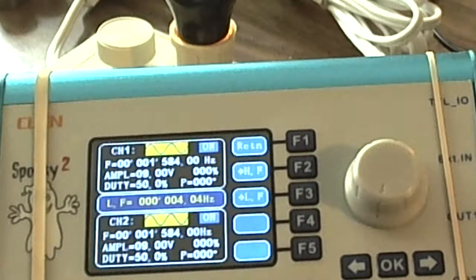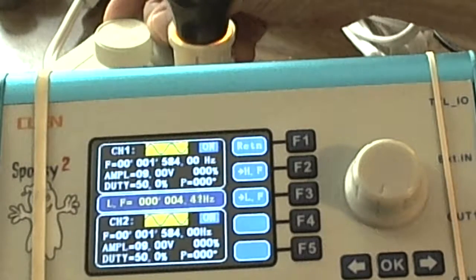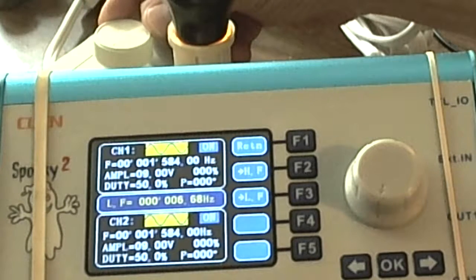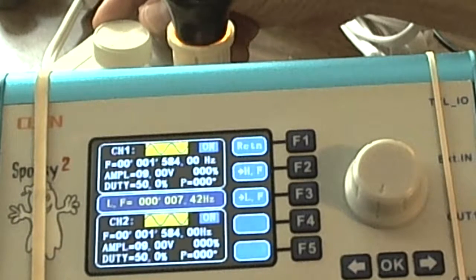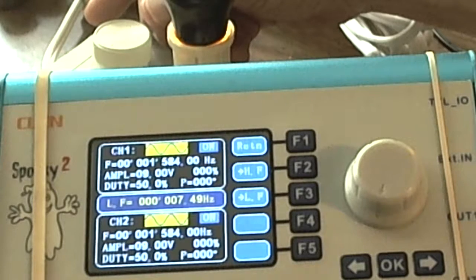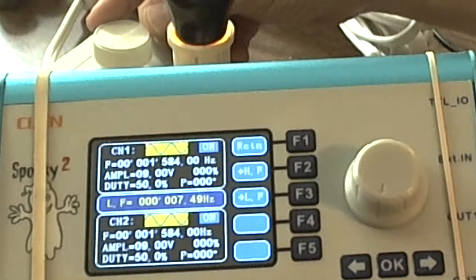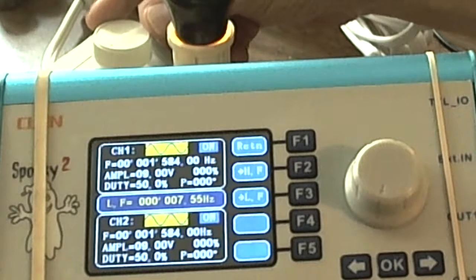Let's dial it up to Schumann's. Schumann resonance is the frequency, the average noise frequency of the planet. It used to be, once upon a time, 7.83 - that's what it was discovered at.